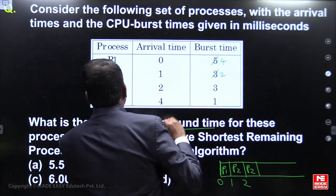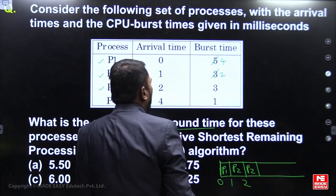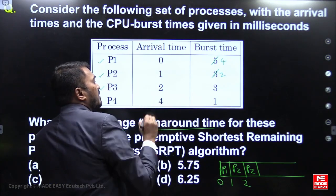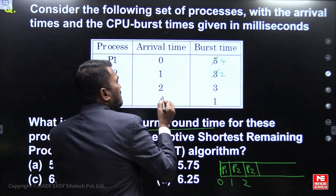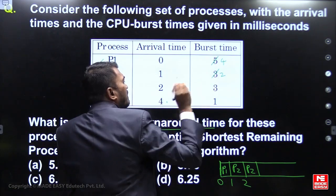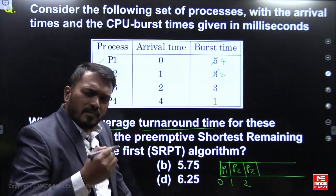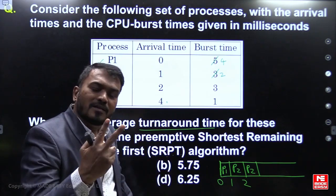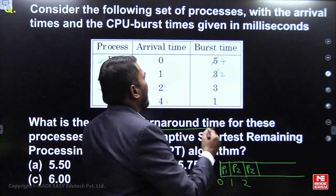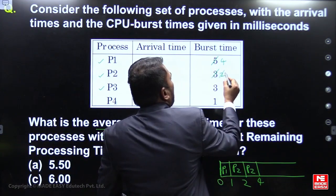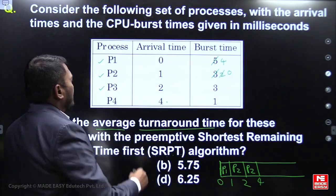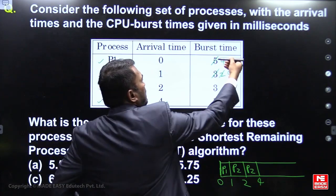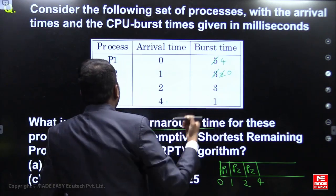P2 requires 2 more units. The next process arrives at time 4, so P2 remains the only shortest job. Execute P2 for 2 seconds directly — remaining time becomes 0. P2 completes at time 4. By time 4, P4 is also available. Among P1, P3, and P4, P4 is the shortest job, so take P4 next.